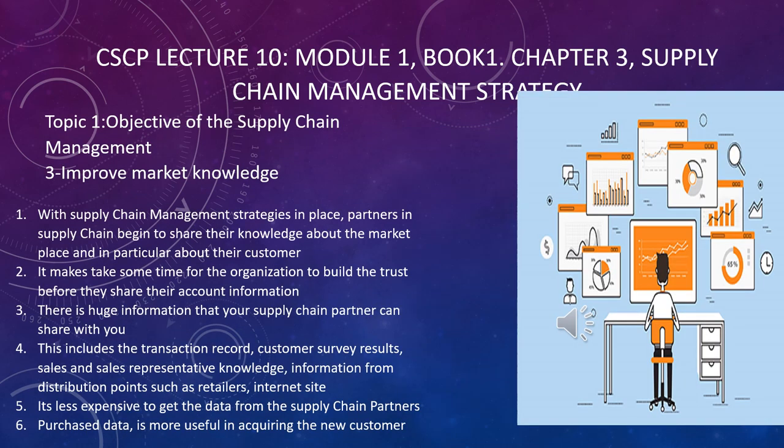The third objective is improve market knowledge. With supply chain management strategies in place, partners in the supply chain begin to share their knowledge about the marketplace, and in particular about customers. It takes some time for organizations to build the trust before they share account information. This includes transaction records, customer survey results, sales and sales representative knowledge, and information from distribution points such as retail and internet sites. It is less expensive to get data from supply chain partners.